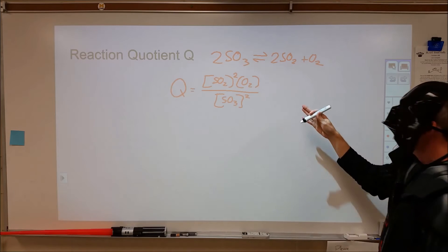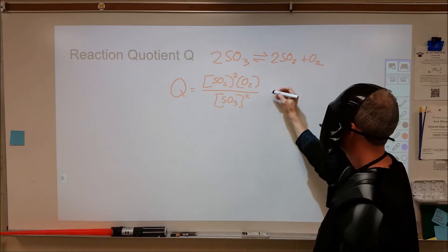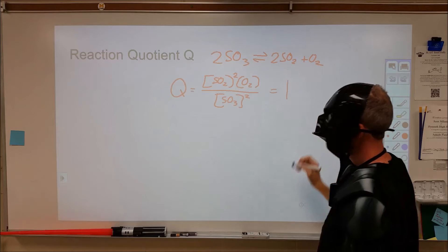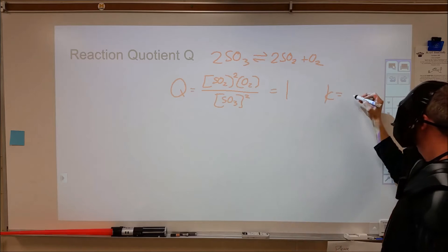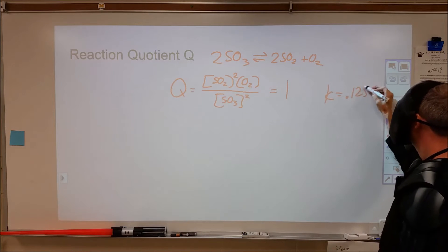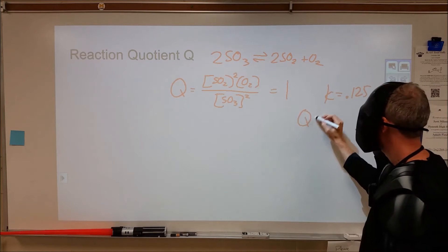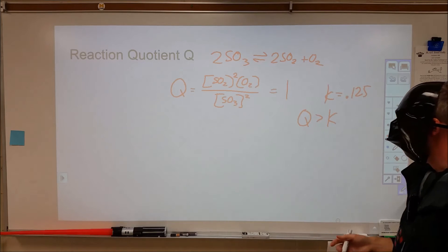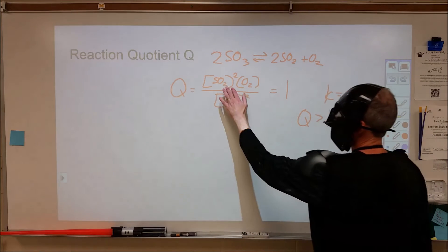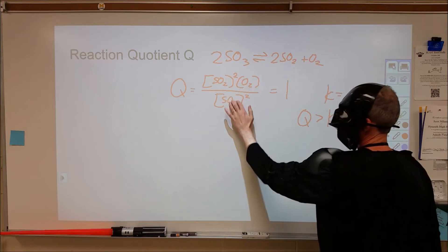Hypothetically, let's say we had a 1 molar concentration of everything. We plug in 1 molar for everything. We would end up with a Q of 1. We have previously learned that the equilibrium constant at some temperature for this is 0.125. What that means is that Q is larger than K, which means we are not at equilibrium and our rates are not equal. What it also means is that we have too much product since Q is bigger than K, which is products over reactants.